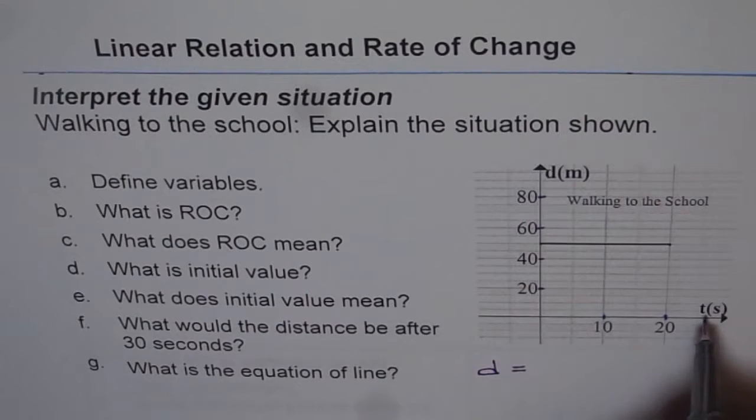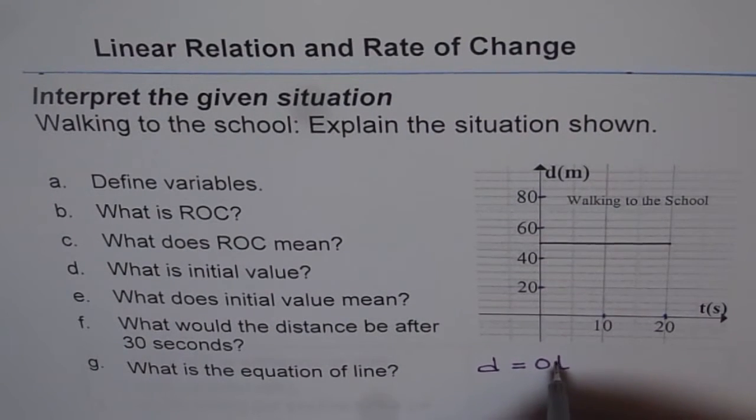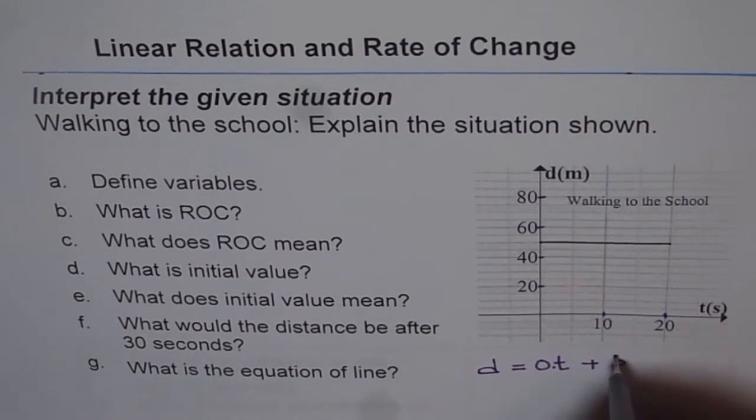And the rate at which time is changing is 0. So it is 0 times time. Do you understand? 0 times time plus initial distance, which is 50 meters. So it is plus 50.